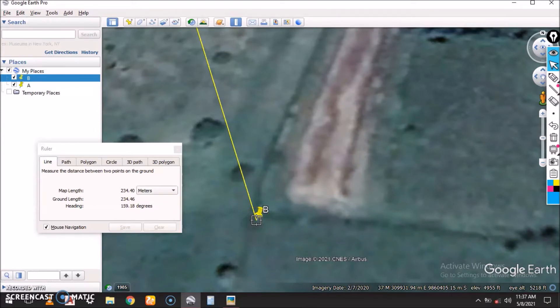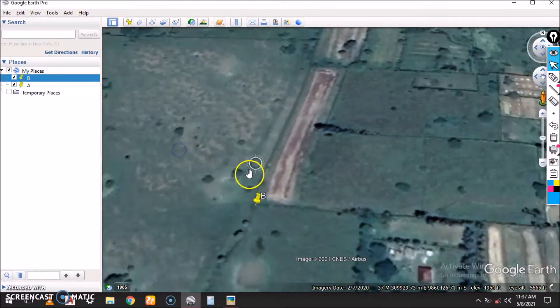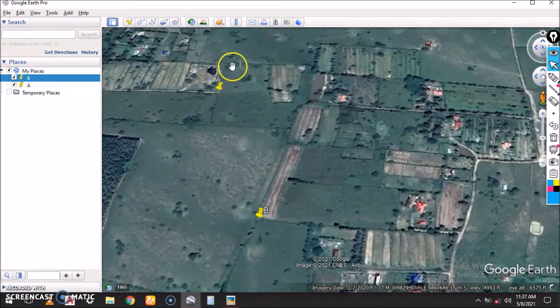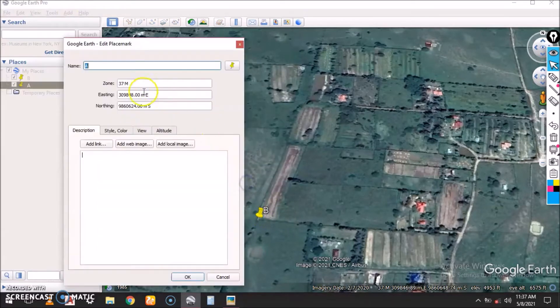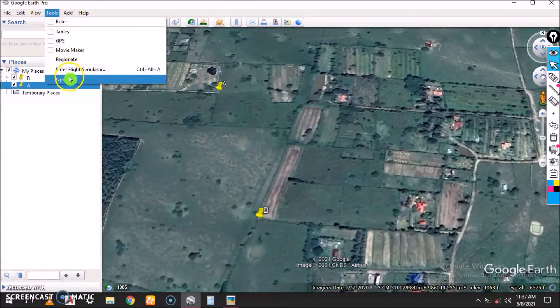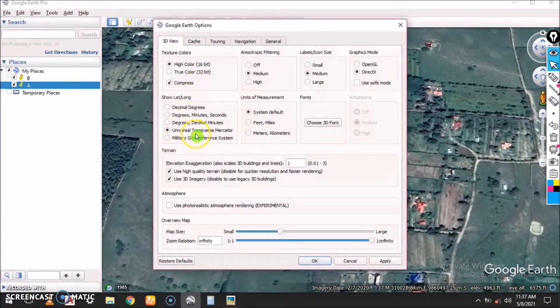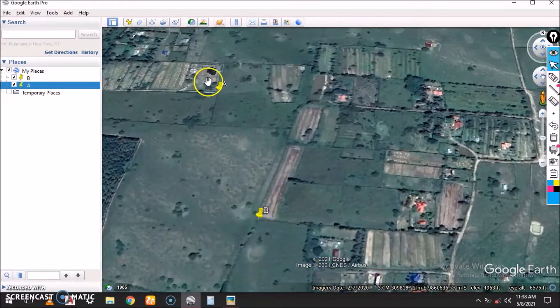That's the distance from A to B. Now let's assume that you have no access to Google Earth and you have the two coordinates. Your coordinates are in UTM, you can check on the properties. The units are in meters. You have points A and B and you need to get the distance without using Google Earth but by calculating mathematically.